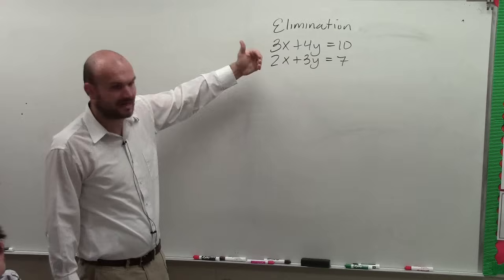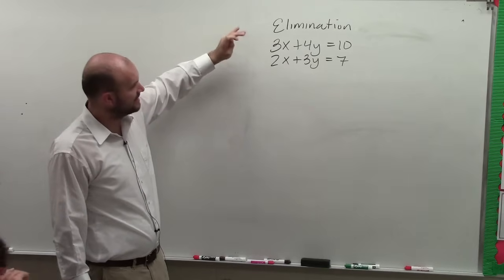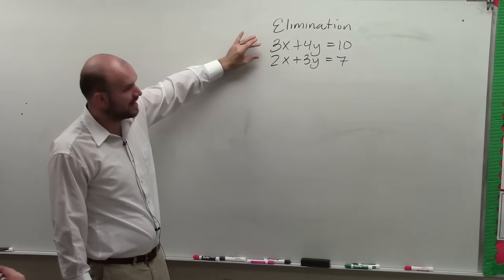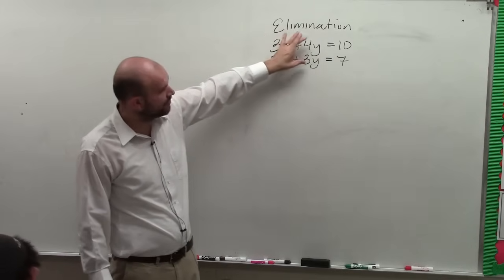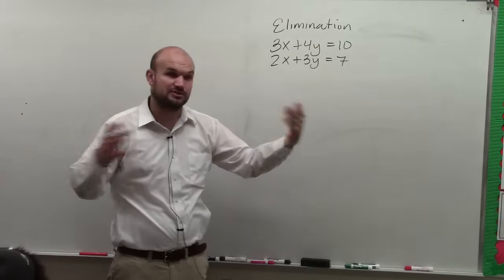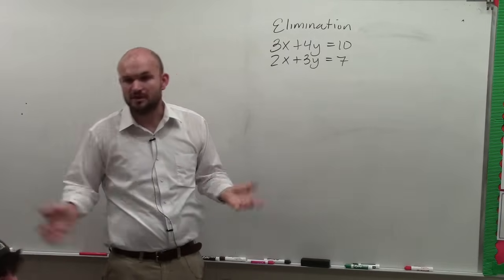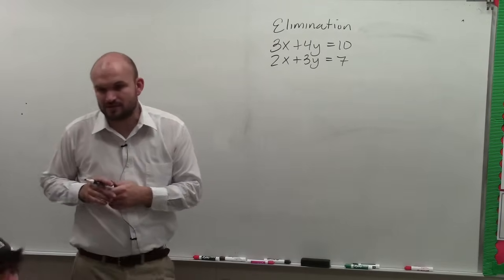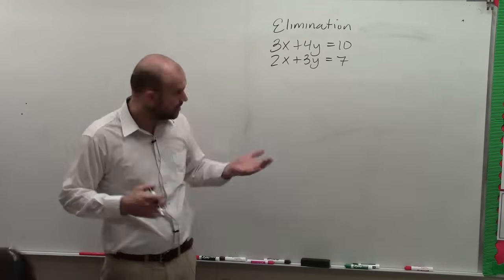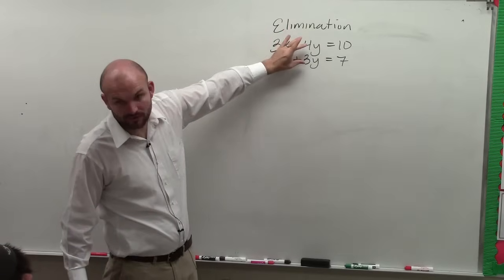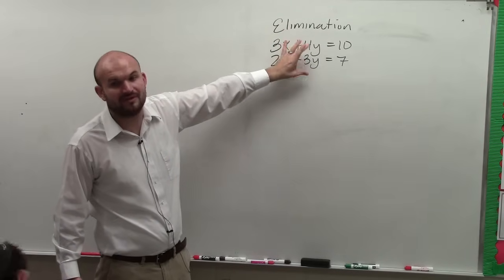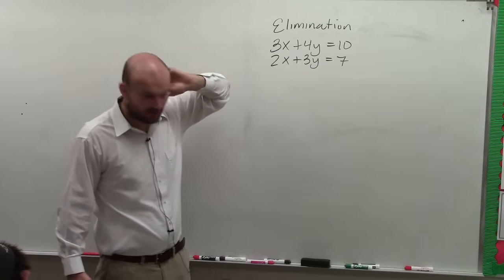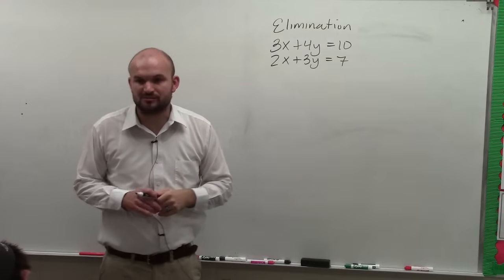So therefore I need to go to the next step, which is the hardest one. I need to find the common multiple of 3 and 2 or 4 and 3. Now it's a toss up. You can solve for x first or you can solve for y first. So what would you like to solve for, x or y? All right, so to solve for y we have 4 and 3. What is a common multiple of 4 and 3? What is the smallest number that they both divide into? 12. All right, would you like to add or would you like to subtract the equations?